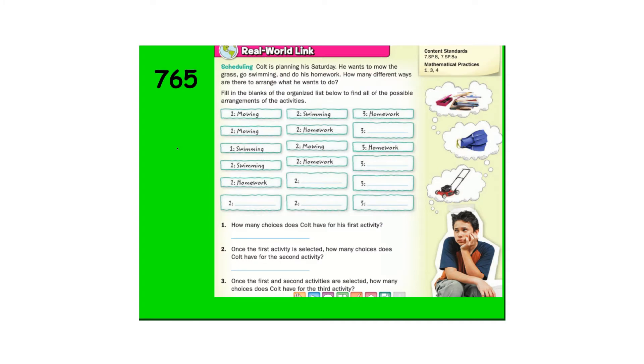Colt is planning his Saturday. He wants to mow the grass, go swimming, and do his homework. How many different ways are there to arrange what he wants to do?